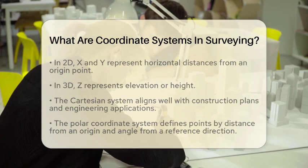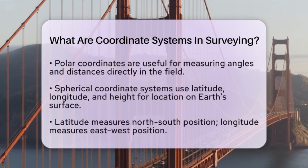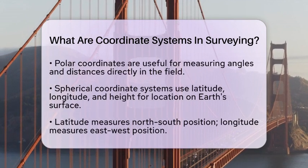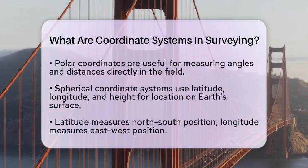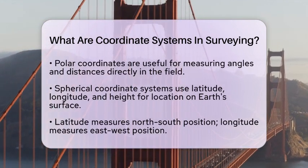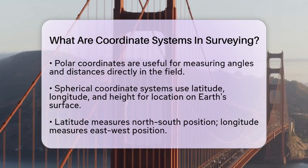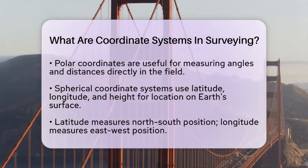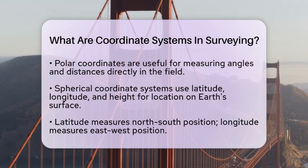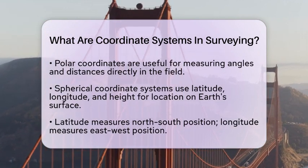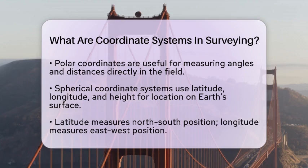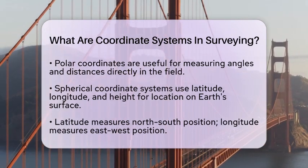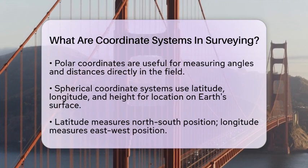For larger projects or when using global positioning systems, surveyors often turn to spherical coordinate systems. These systems use latitude, longitude, and height to describe a point's location on the Earth's surface. Latitude measures the north-south position, while longitude measures the east-west position. Height provides elevation above a reference surface.